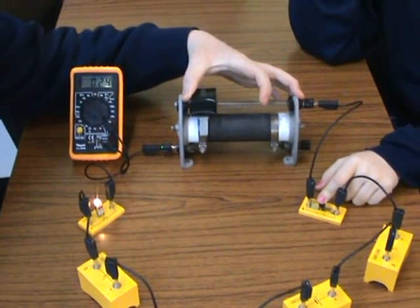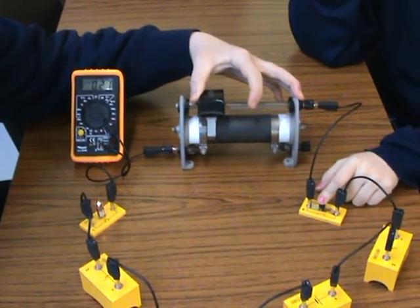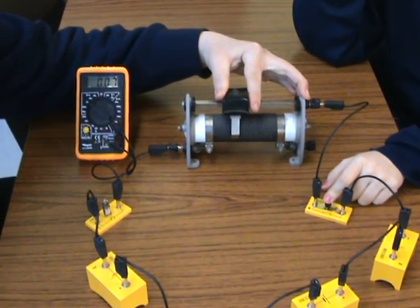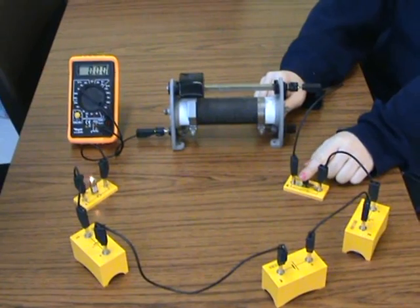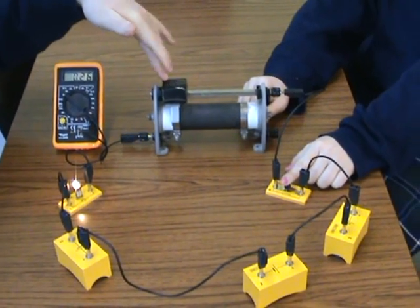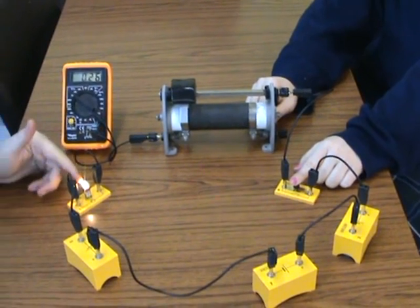Here we are using the rheostat as a variable resistor. The switch is closed. In this position, the resistance of the rheostat is at zero. The current is at its maximum and the bulb is at its brightest.